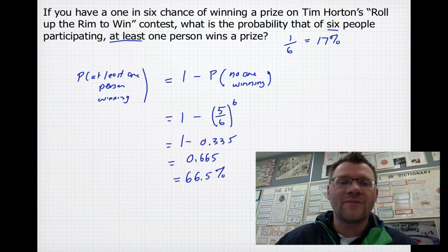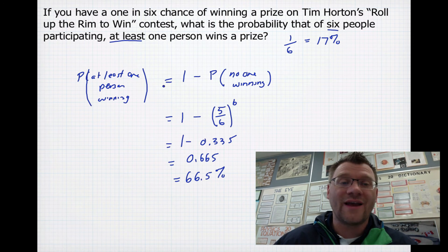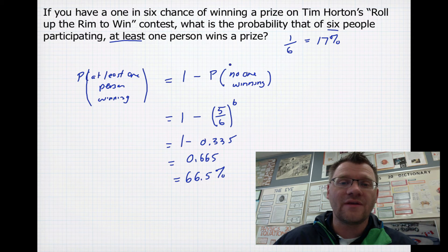So the key thing here is being able to know what the opposite of what you're trying to find actually is, because sometimes it's going to be easier to find out the probability, in this case, of no one winning, and then just subtracting that from one.